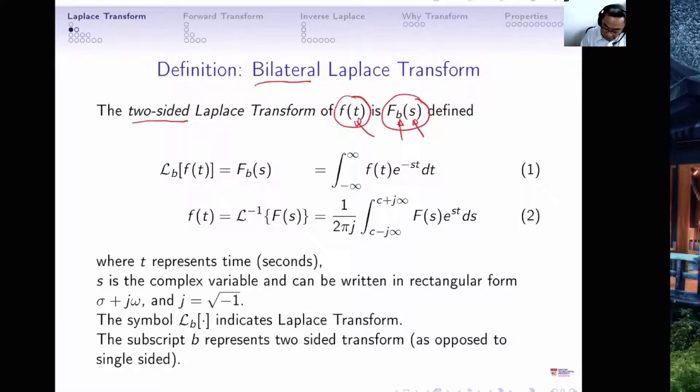The bilateral transform is defined by this equation. It takes the signal f(t), multiplied by e^(-st), and performs the integration over negative time infinity to positive time infinity, hence the word two-sided, bilateral.